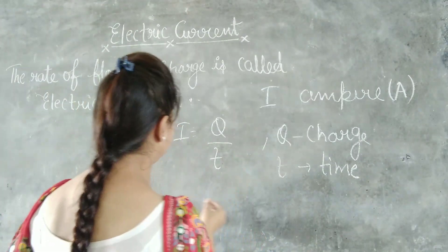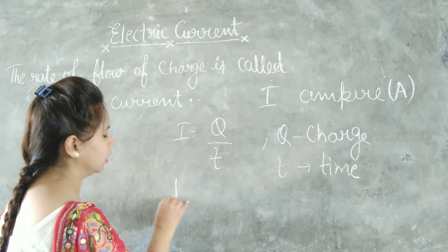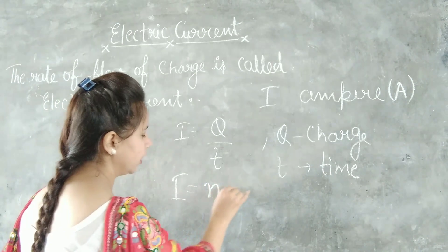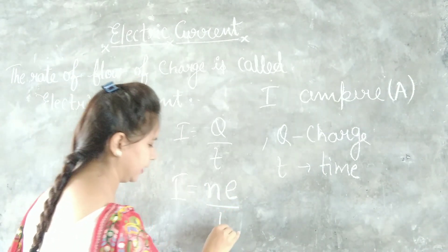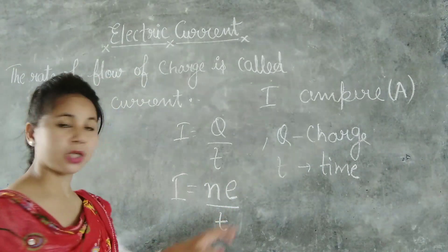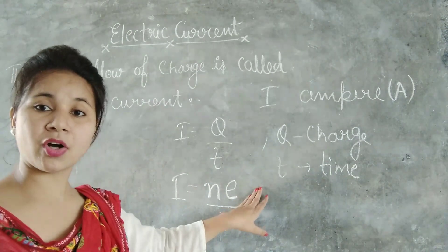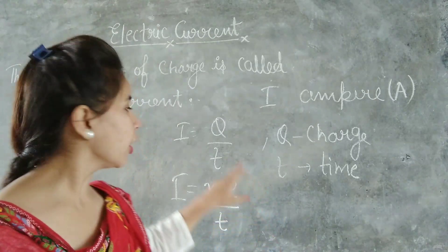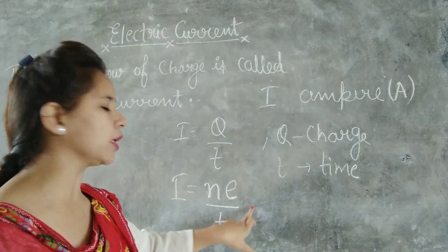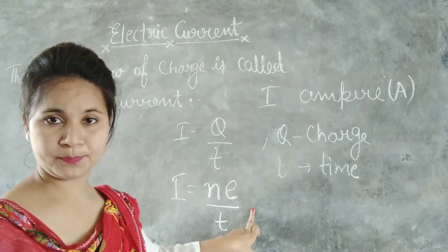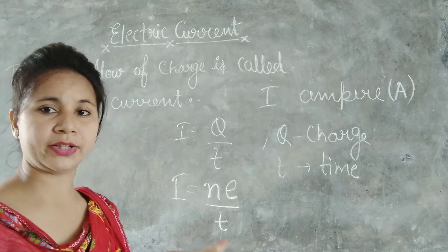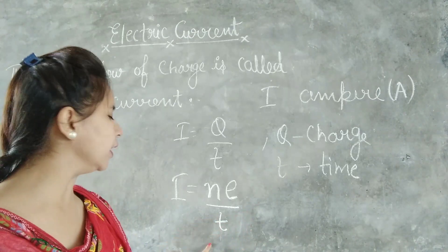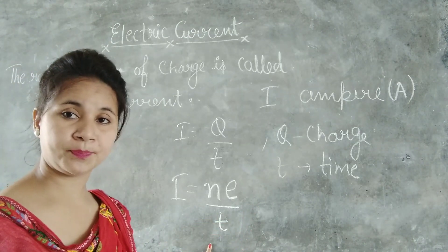Another formula is also there: I is equal to ne upon T. This comes from the rule of quantization of charge, where Q is equal to ne. So the another formula of electric current is I is equal to ne upon T.